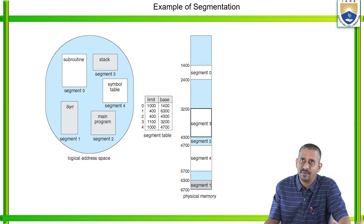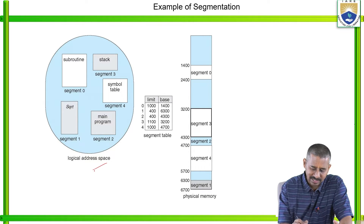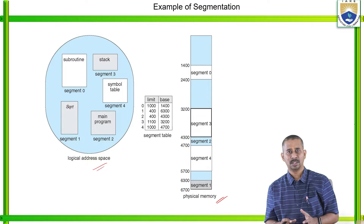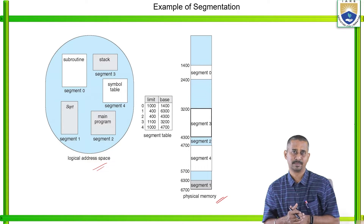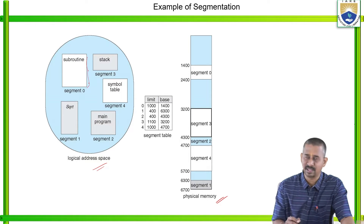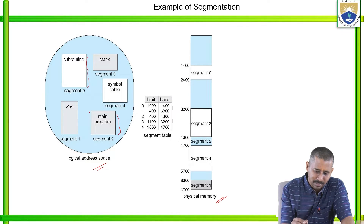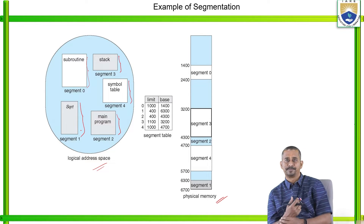Let us look at an example of segmentation. The logical address space and physical memory are shown. According to segmentation, the logical address space is divided into variable-sized segments: segment 0 (subroutine), segment 1 (square root), segment 2 (main program), segment 3 (stack), and segment 4 (symbol table).